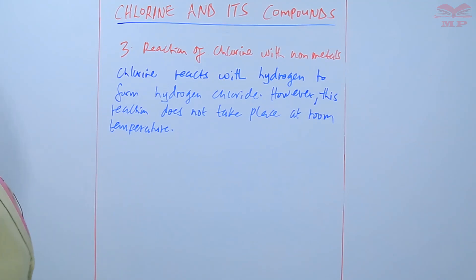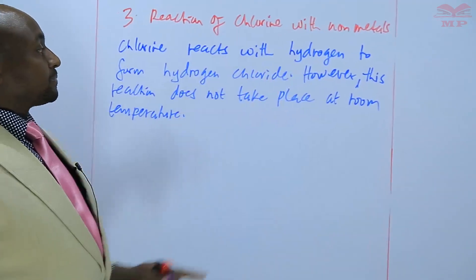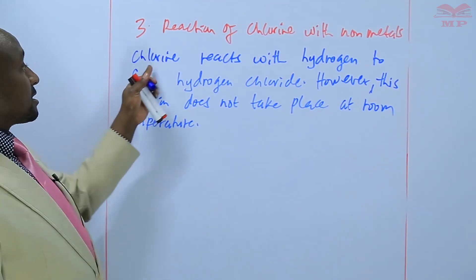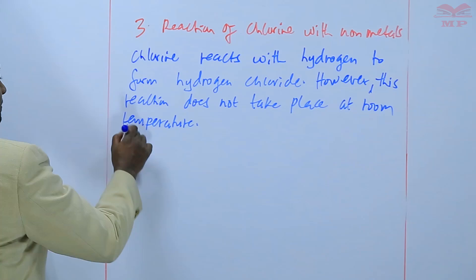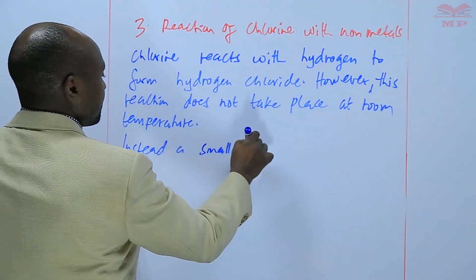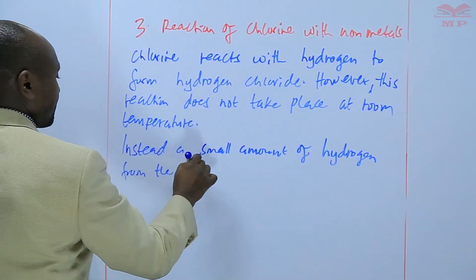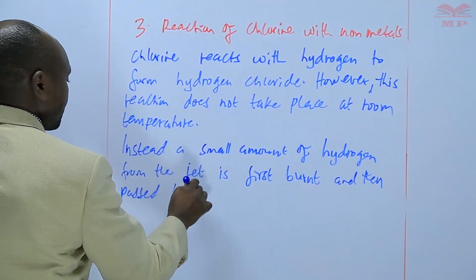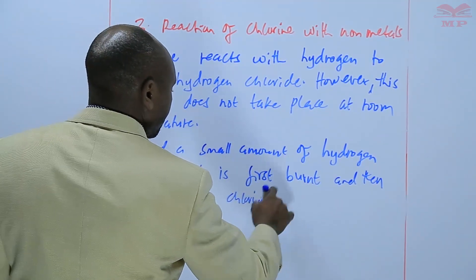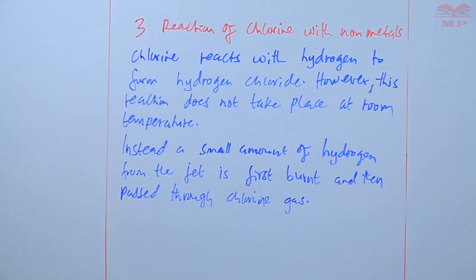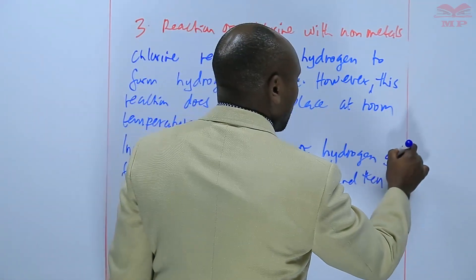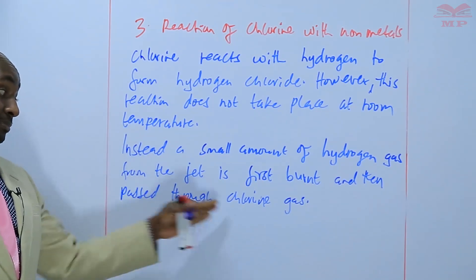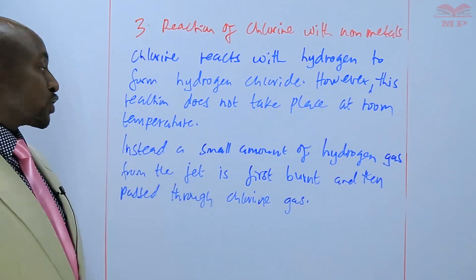So instead, a small amount of hydrogen — that is pure hydrogen — is burnt and then it is passed into chlorine gas so that the reaction can take place. We take a small amount of hydrogen gas from a jet with a very small opening, it is first burnt, and then as it is burning it is passed into chlorine gas.